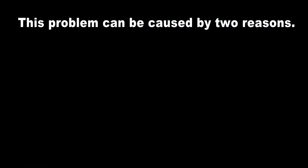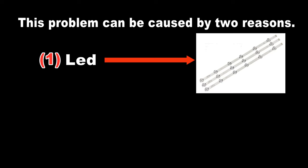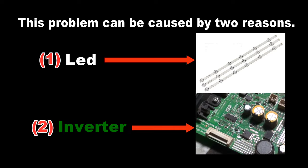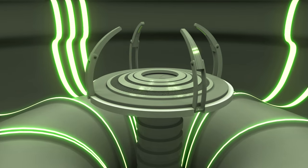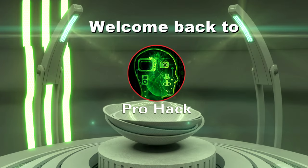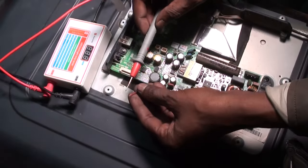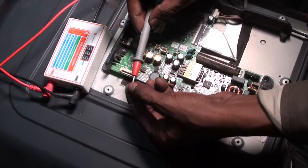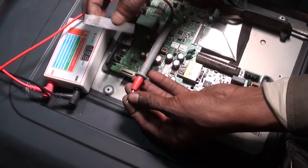I will discuss the LED TV lighting problem. The lighting problem can be caused by two reasons: reason one, LED light; reason two, inverter. First, check the backlight using a backlight tester.